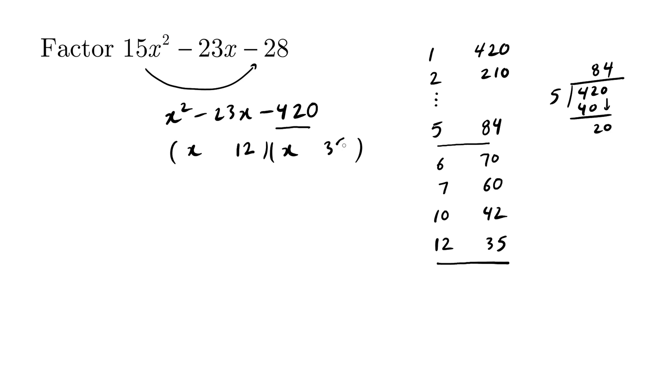12 and 35. The negative is stronger so we put it with the bigger number, 35 here.